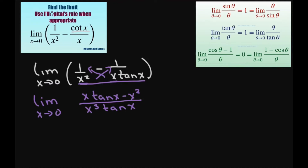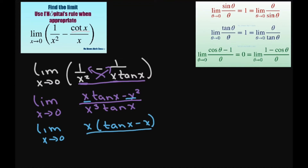The next thing I'm going to do is write this as the limit as x approaches 0 and factor out an x. So when you factor out an x, you're going to get x times the quantity tan of x minus x.